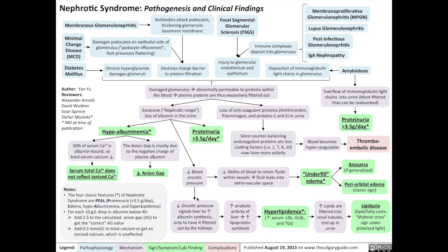The reduced oncotic pressure of the blood also signals the liver to increase albumin synthesis — only to have it filtered out by the kidneys. However, this increased anabolic activity of the liver will increase lipoprotein synthesis as well, resulting in hyperlipidemia — consisting of increased serum LDL, VLDL, and triglycerides. More lipids are thus filtered into the renal tubules and end up in the urine, resulting in lipiduria, presenting as lipid or fatty casts and a Maltese cross sign under polarized light.